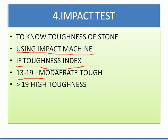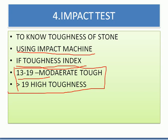The toughness index from the impact test is interpreted as follows: if it is between 13 to 19, the stone is moderate tough; if it is more than 19, the stone has high toughness. These values are very important to remember.